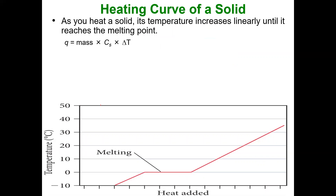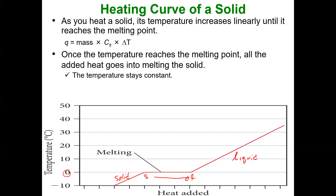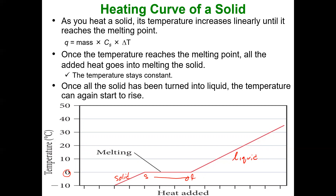Looking at the solid portion of the curve: below zero degrees Celsius is my solid — it's linear. From there, I go from solid to liquid at the melting point, then I'm in the liquid region. Once I reach the melting point, all the energy goes into the phase change — the temperature stays constant, zero slope — and that's where I use the heat of fusion.